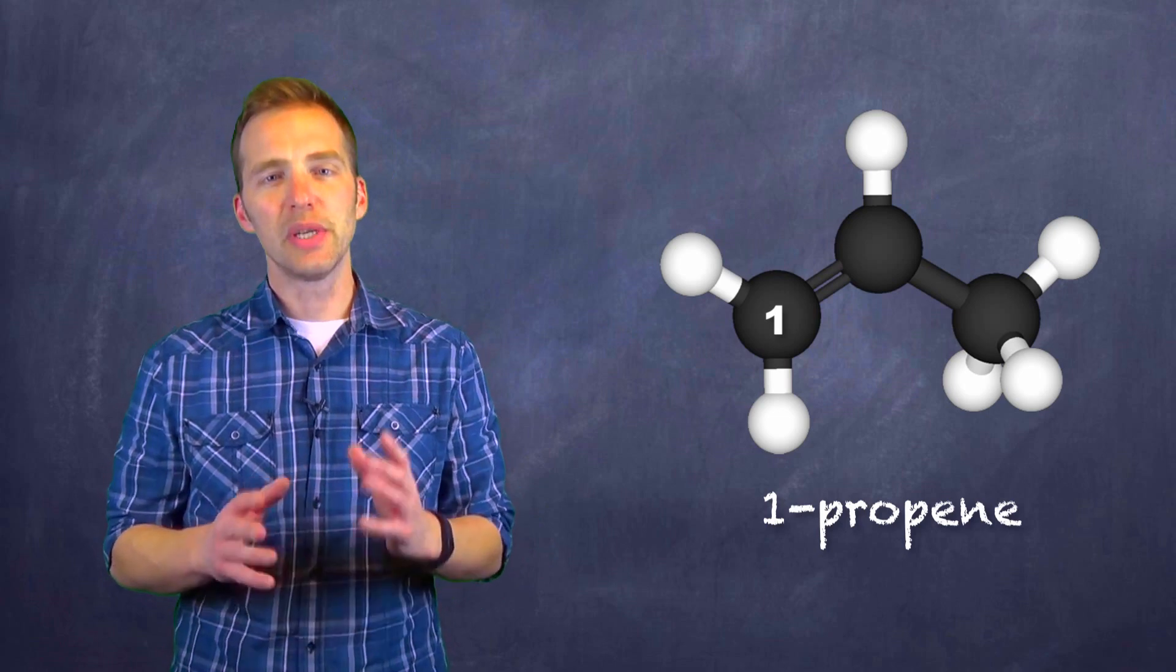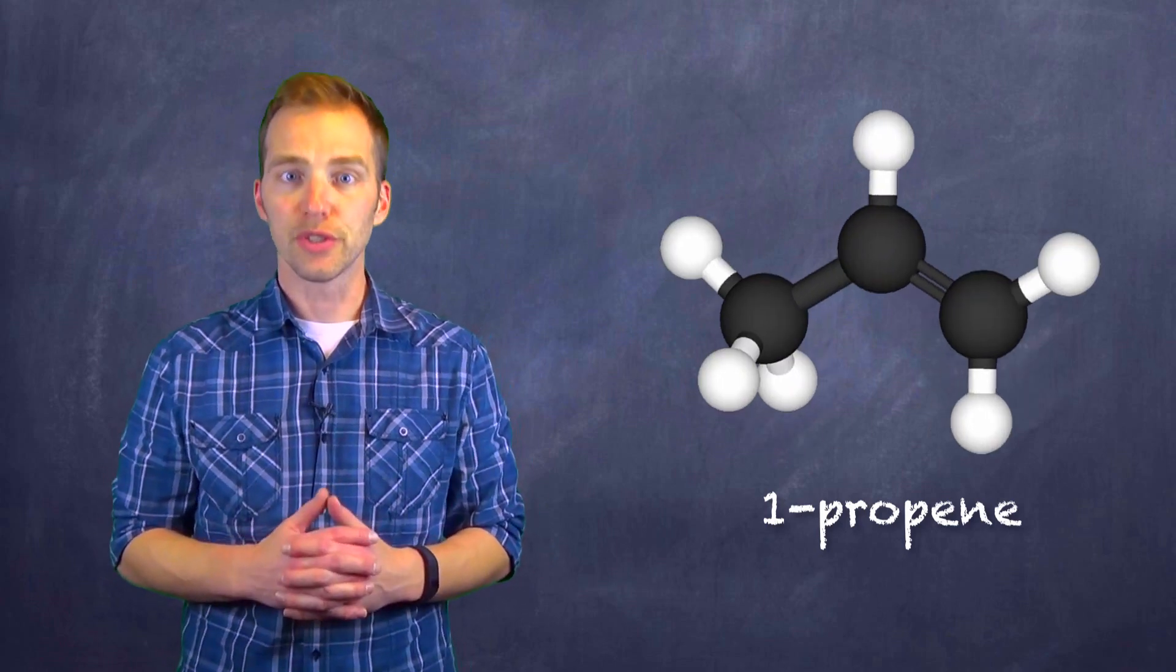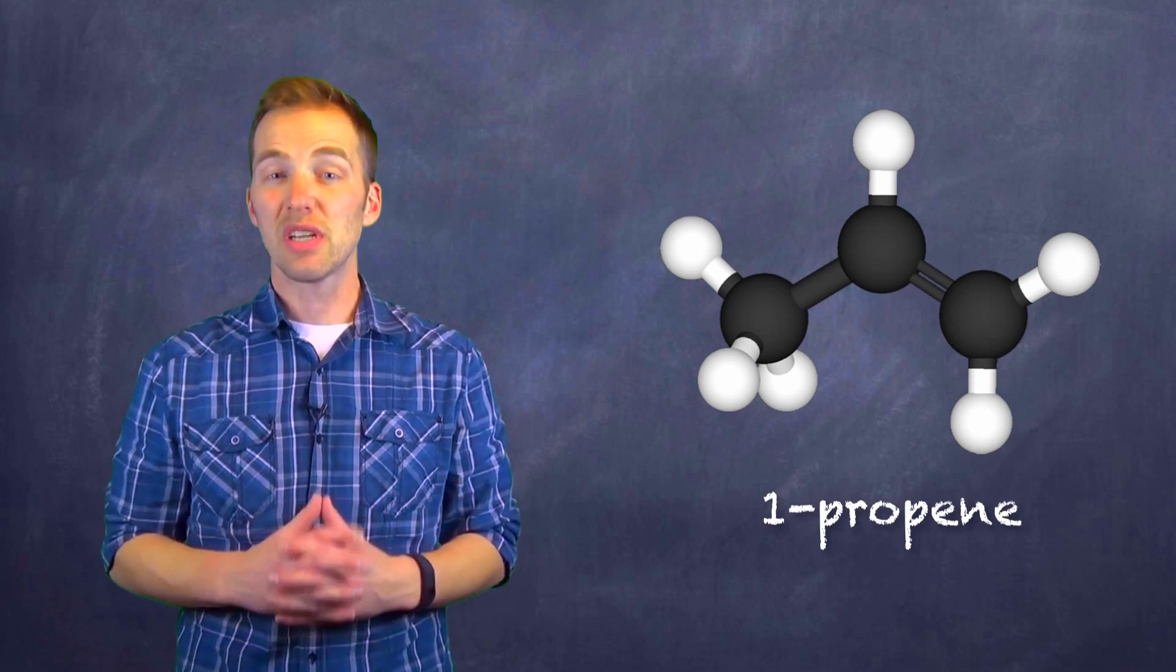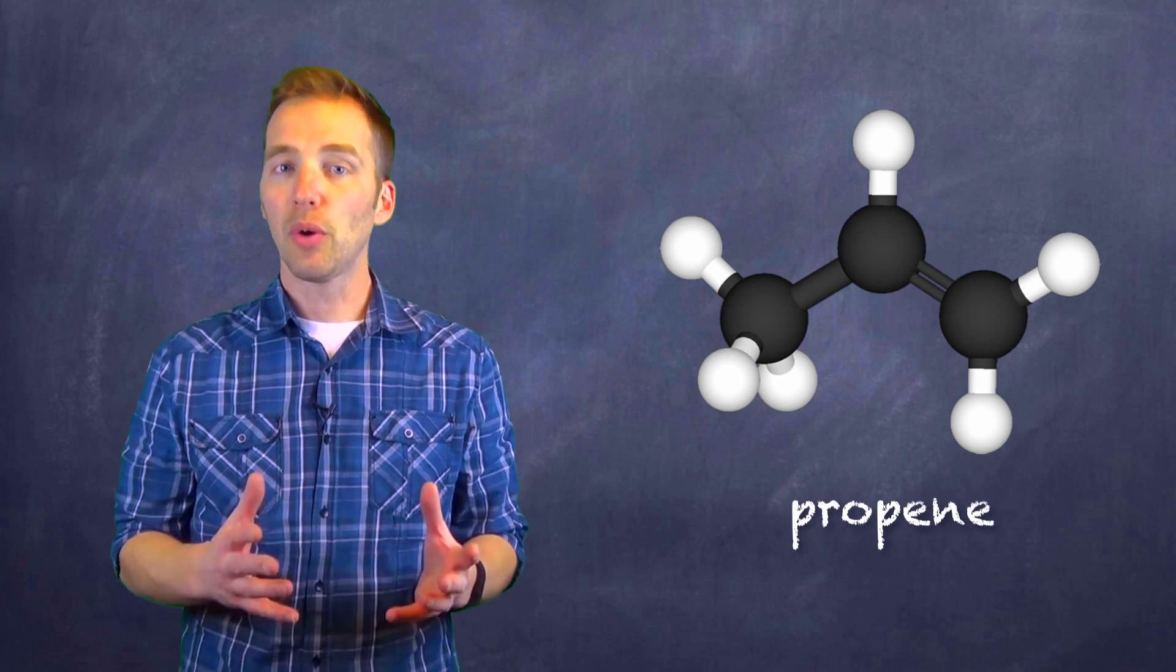However, if we take a look at this, we can notice that regardless of how we orient it, that multiple bond is always going to start on the first carbon. So there's really no such thing as two-propene. So we can just call this molecule propene. However, that's a very simplified alkene. So let's take a look at one that's a little more complicated.